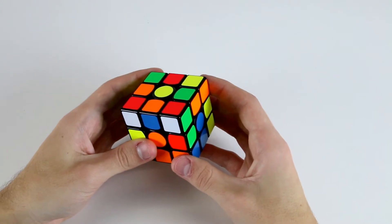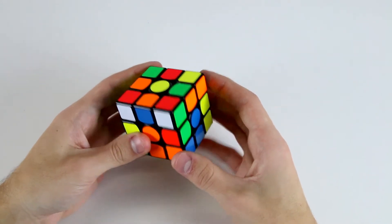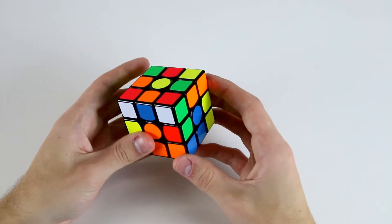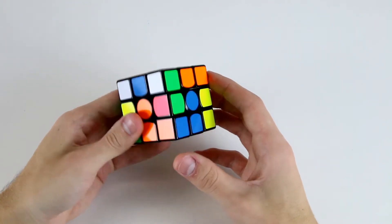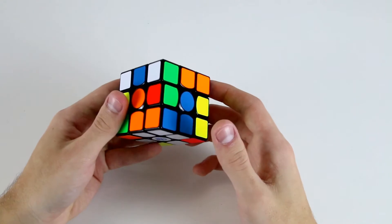So the next thing I want to explain to you is the concept of oriented edges. Essentially, edges are considered oriented if they can be inserted into their F2L slot using only U, L and R moves.